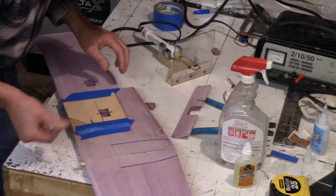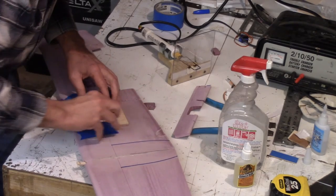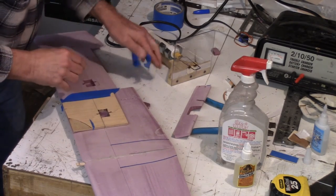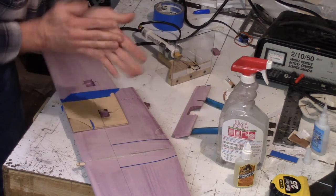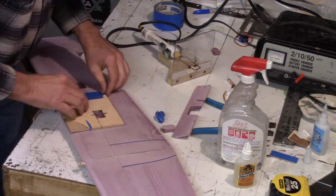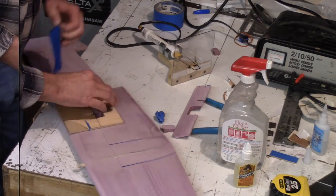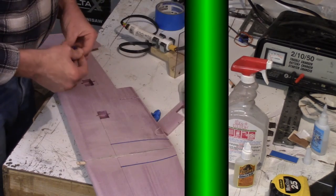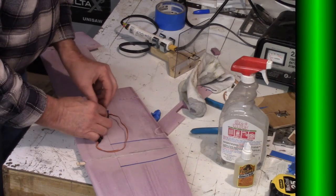It's that quick the servo pocket is accurately cut right to the nice tight fit of the servo and all I have to do is just pop the template off and I have a servo pocket cut in the wing.